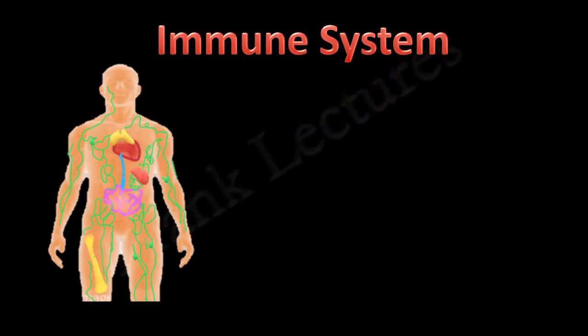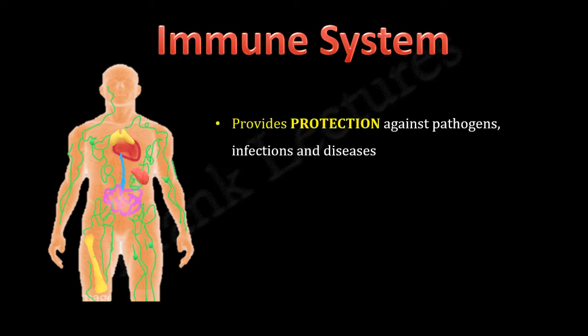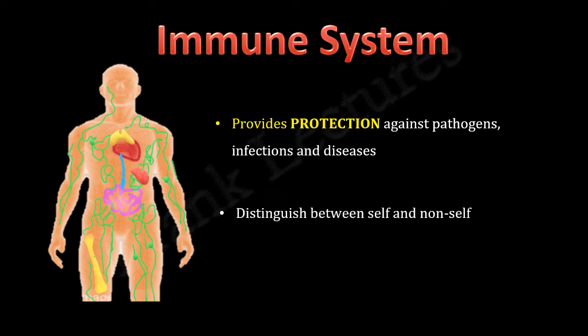At this point in our lecture series, we understand how our immune system provides protection against pathogens, diseases and infections. Our immune system is able to recognize and distinguish between self and non-self antigens. By using a wide variety of defense mechanisms, the immune system eliminates potentially harmful antigens from the body.